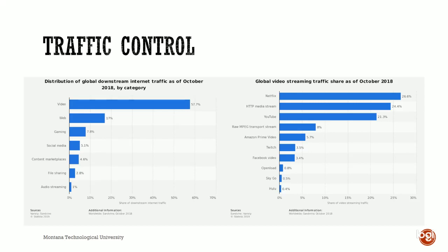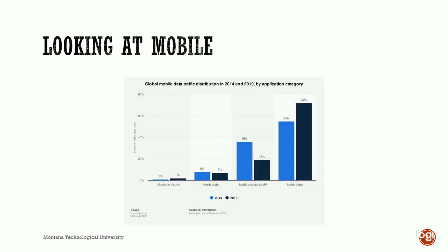Let's look at another way of looking at things: mobile. We all have mobile phones, and a lot of our content consumption happens there. You can see mobile file sharing is a very tiny piece of the puzzle, but people watching video on their phones has increased — the light blue is 2014, the dark blue is 2019. There's a definite increase in video watching, and a decrease in mobile web data usage, as we're getting on Wi-Fi more — restaurants, motels, shopping malls, airports are all offering free Wi-Fi.